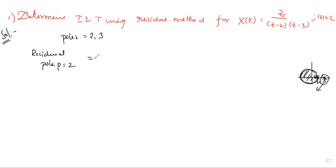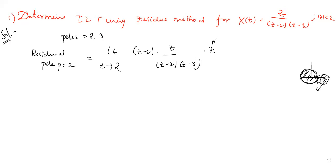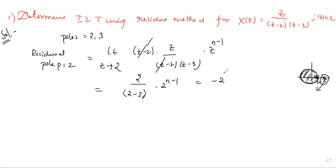The residue value: limit as Z tends to 2 of Z minus 2, times X of Z — the given function Z divided by Z minus 2 times Z minus 3 — times Z to the power n minus 1. The Z minus 2 cancels. Substituting Z equal to 2: 2 divided by 2 minus 3, times 2 to the power n minus 1, equals minus 2 to the power n. This is the residue at pole p equal to 2.